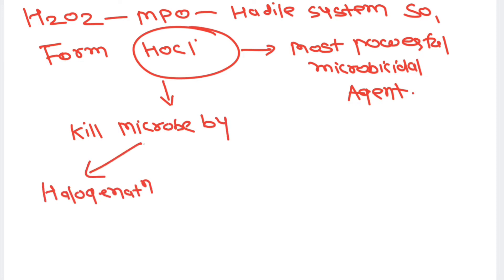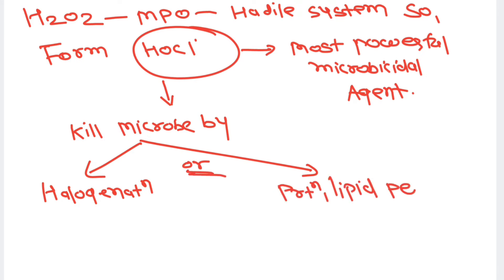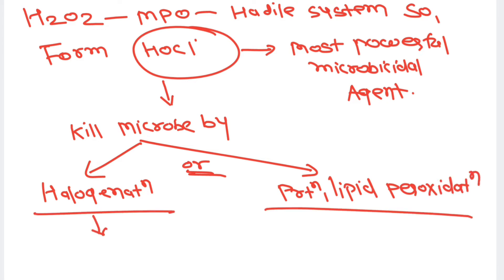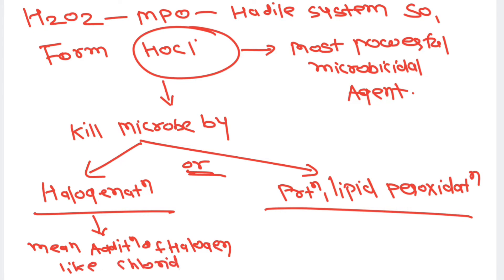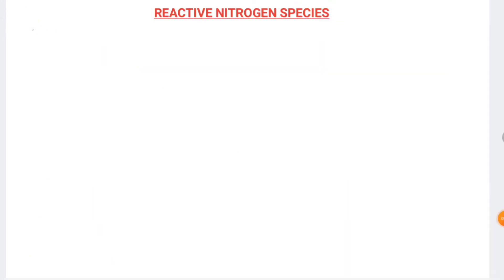HOCl kills microbes by two processes: halogenation and protein/lipid peroxidation. Halogenation means the addition of a halogen such as chloride into the microbe — it is a chemical reaction where the halogen is added to destroy the microbe.